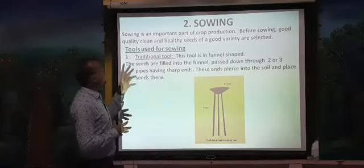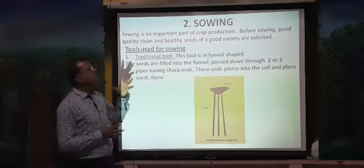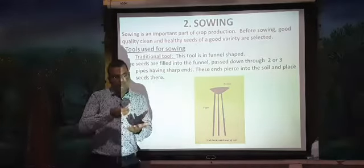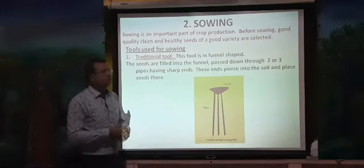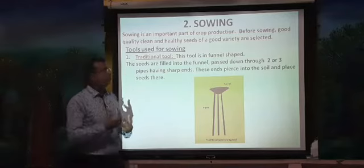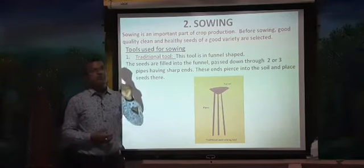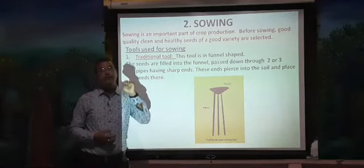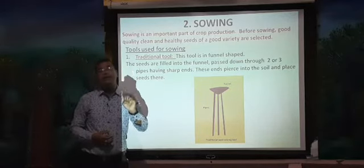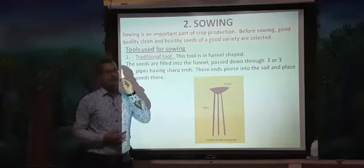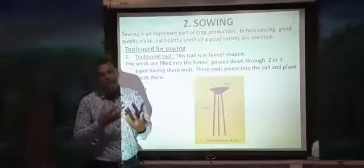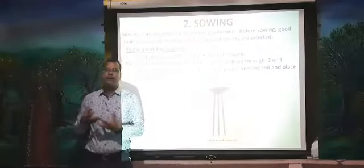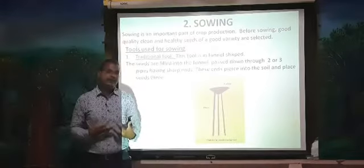So what is sowing? Sowing is an important part of crop production. Whatever seed we have, that seed has to be put into the soil — that is sowing. Before sowing, we need to select good and healthy quality seeds. How do we select them? How do we observe whether a seed is good or bad? How can we test them?